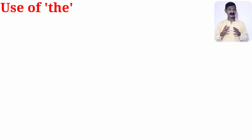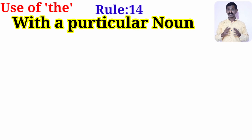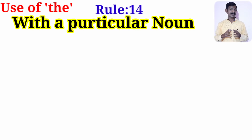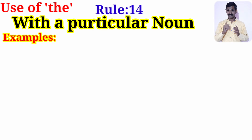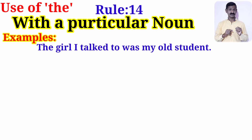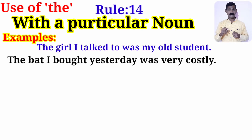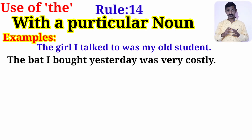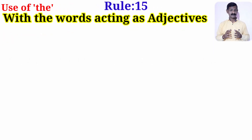We use article 'the' before the names of a particular person or thing. For example: 'The girl I talked to was my old student' — we use 'the' because we are certain about which girl. Similarly: 'The bag I bought yesterday was very costly.'